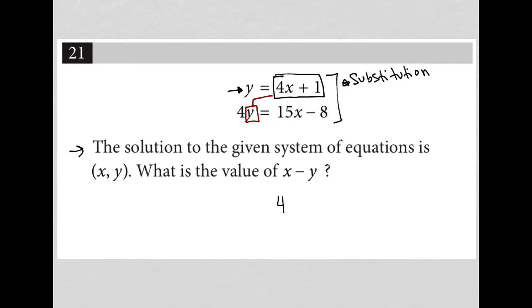So when I do that, I end up with 4 parentheses 4x plus 1 is equal to 15x minus 8. I can then distribute the 4 across, leaving me with 16x plus 4 equals 15x minus 8.